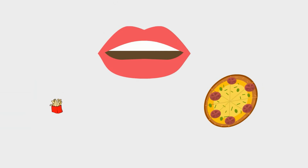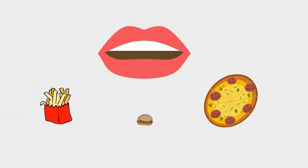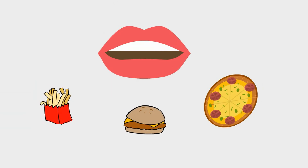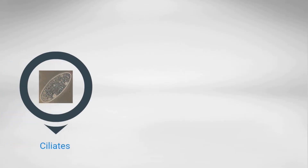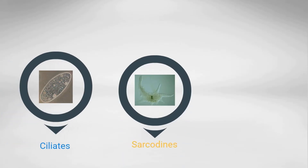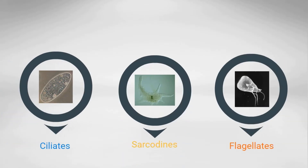They take in their food by either engulfing their food, using a mouth-like projection, or absorbing the nutrients. I will look at three types of protozoans: the ciliates, sarcadines, and flagellates.